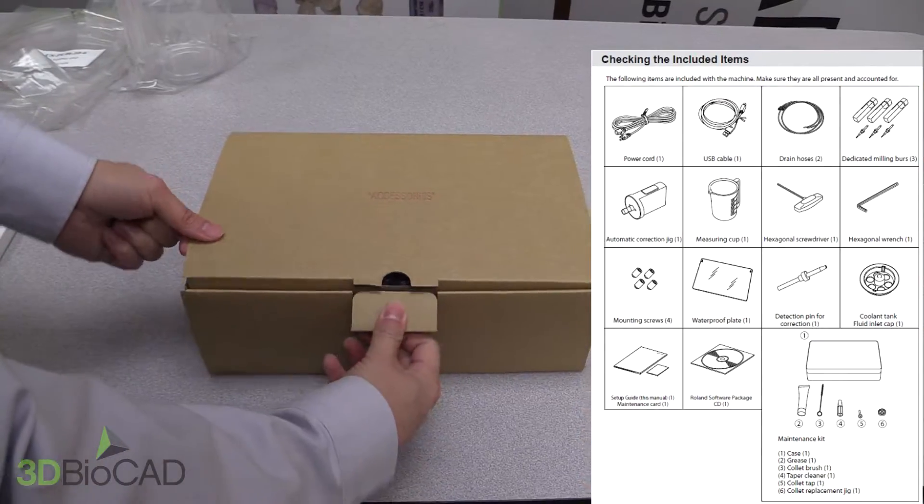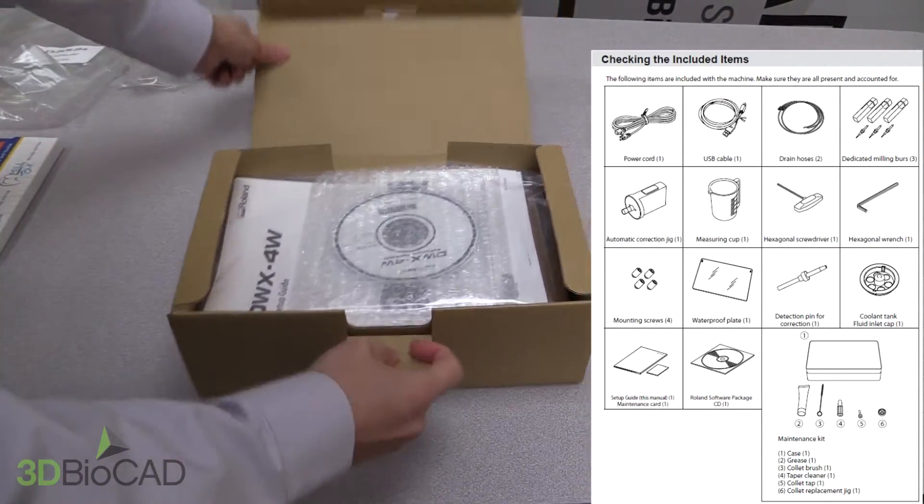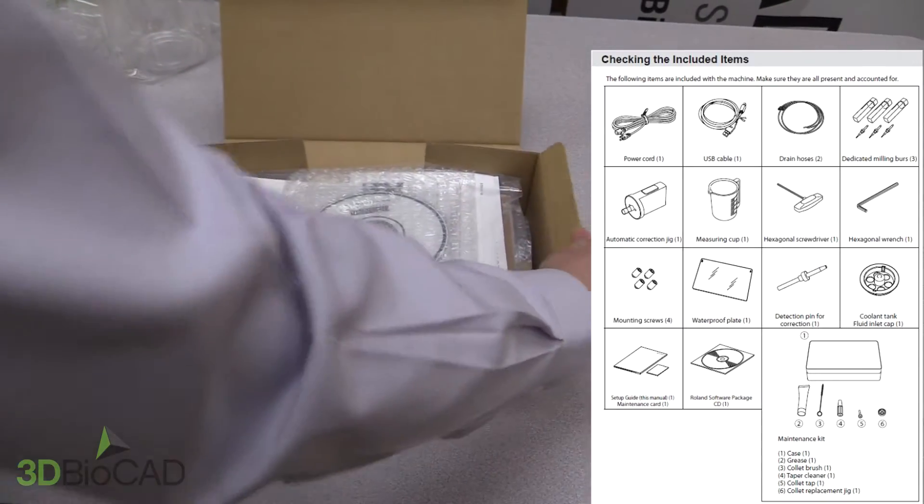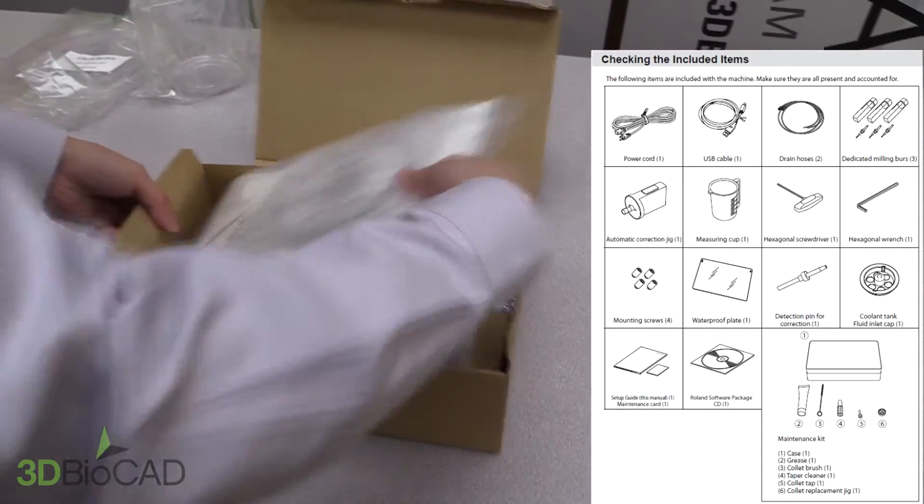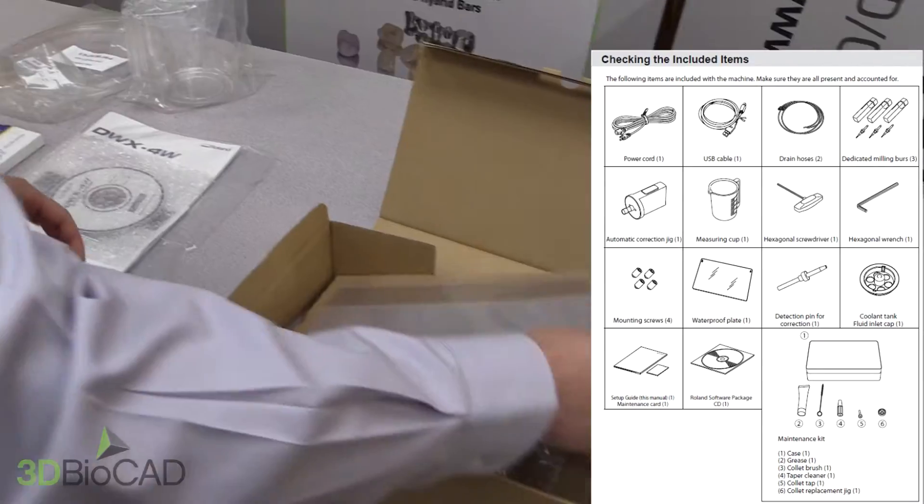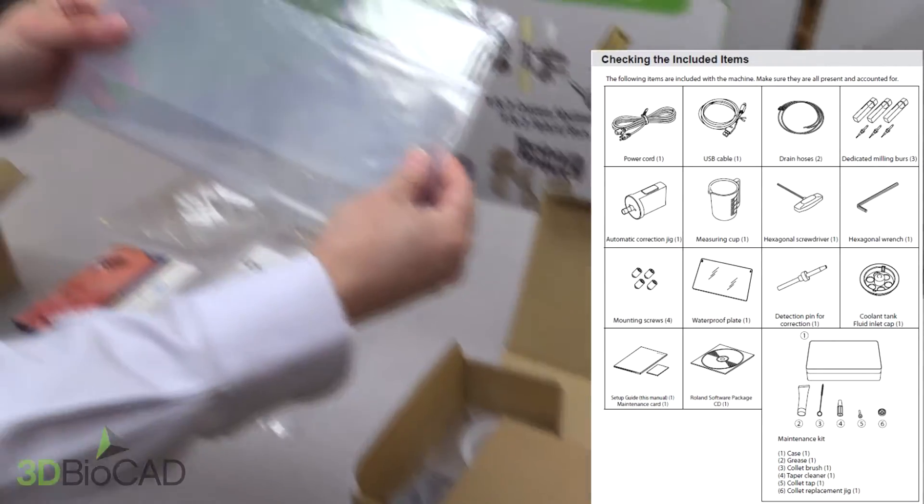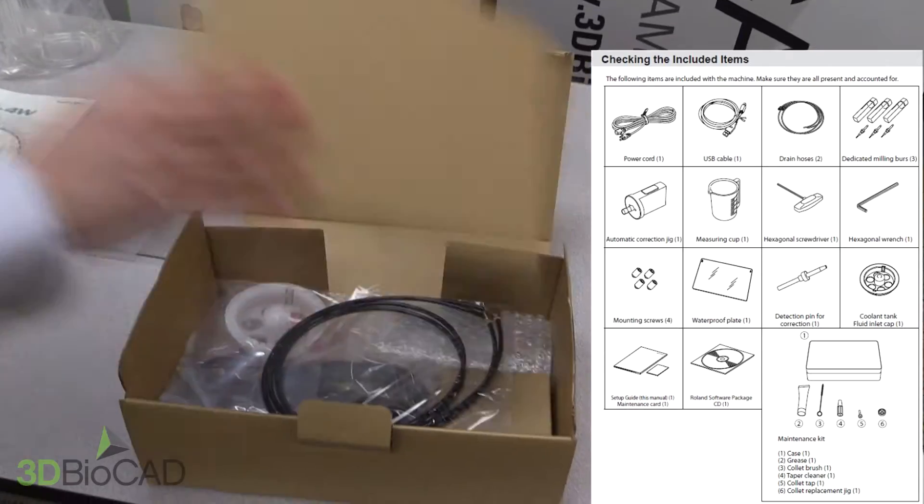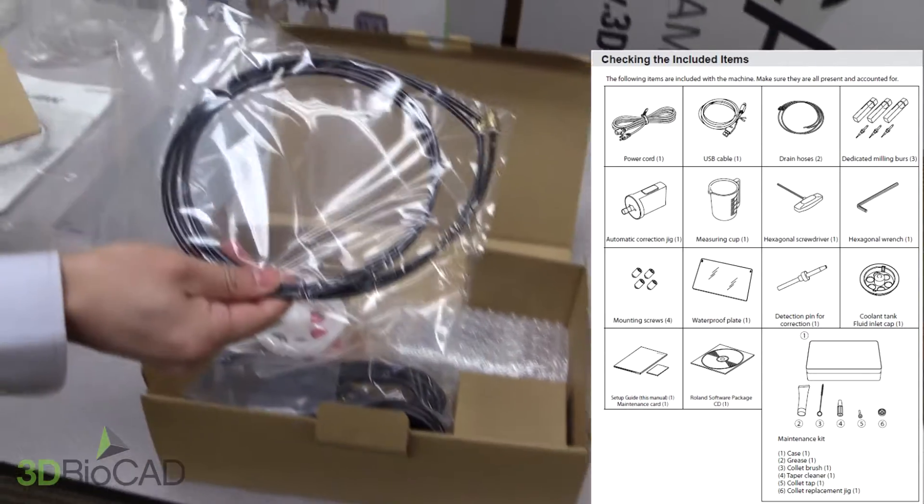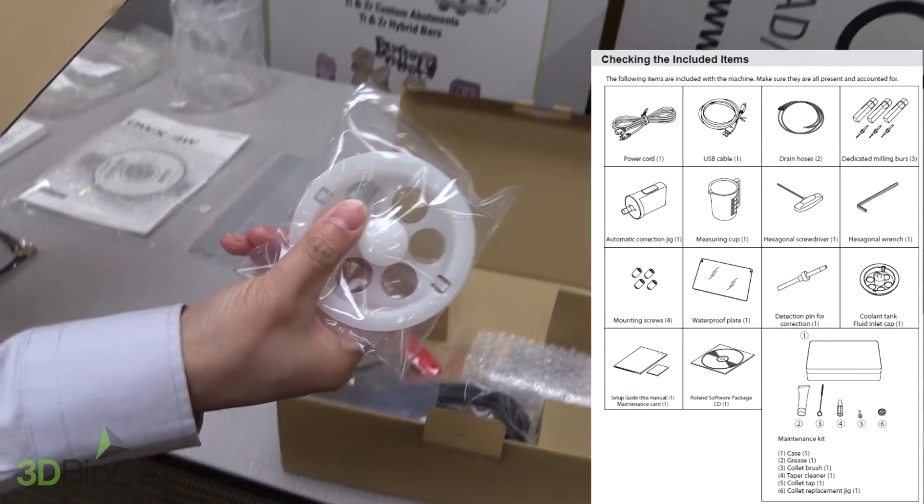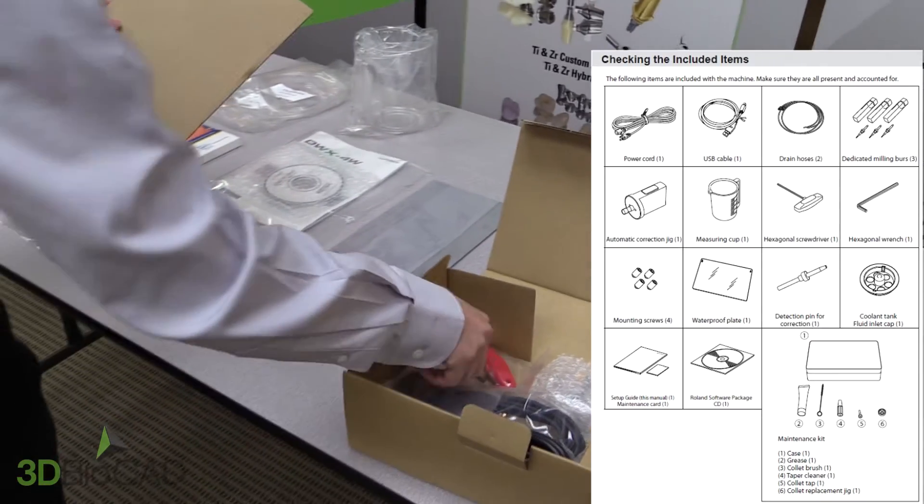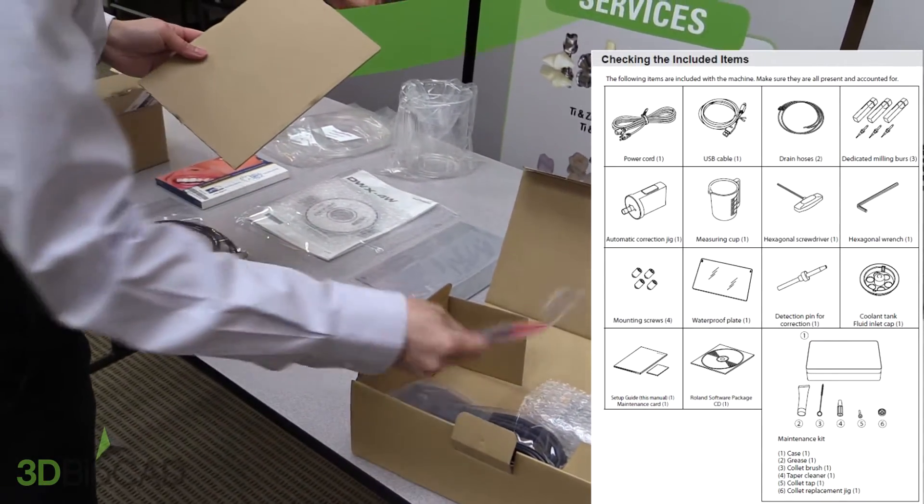Inside the accessories box, you should have the following. You will have the setup guide and maintenance card. You'll see a waterproof plate, drain hoses, a coolant tank cap, one hexagonal screwdriver and one hexagonal wrench.